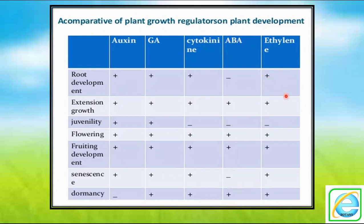Ethylene is called the fruit ripening hormone. Ethylene is a gaseous hormone which is essential for fruit ripening. It also takes part in root development and growth expansion, as well as in flowering, fruiting, senescence, and dormancy. There is a very minor role in juvenility.